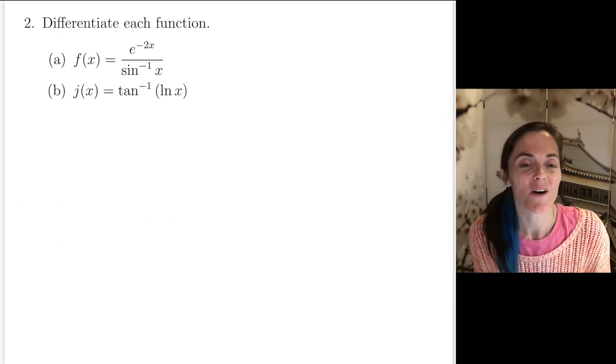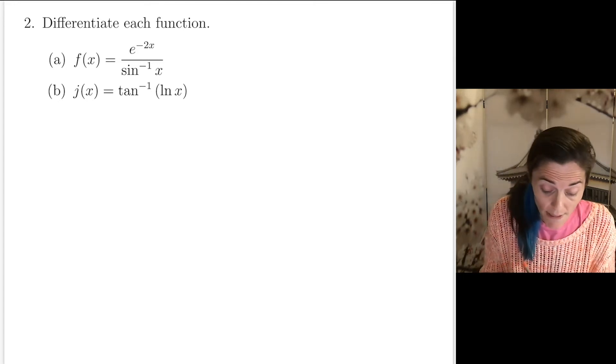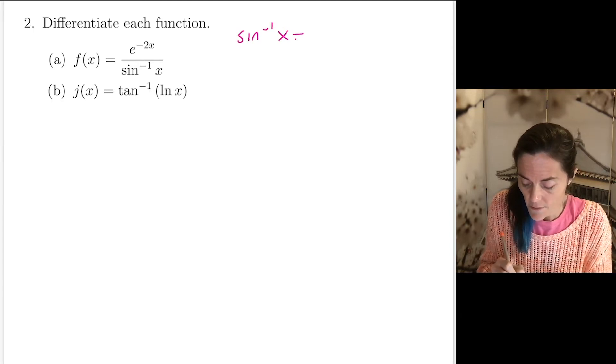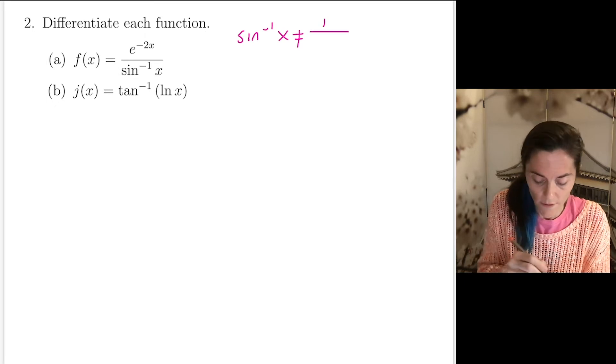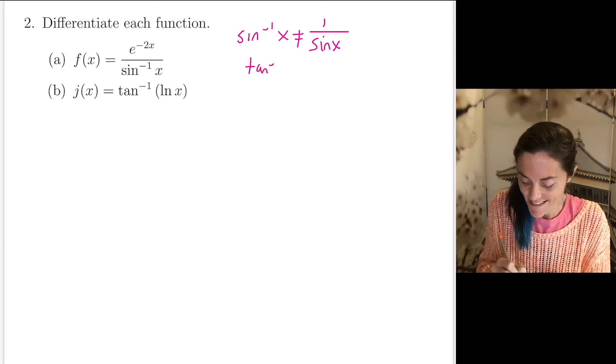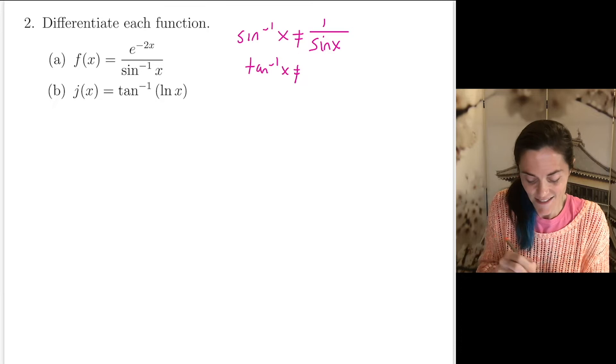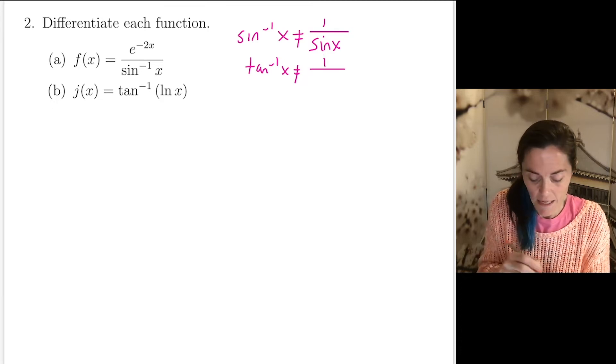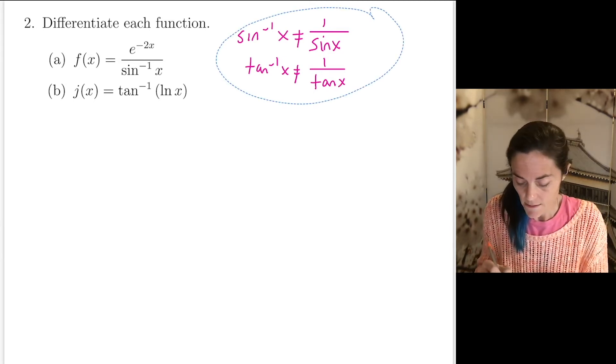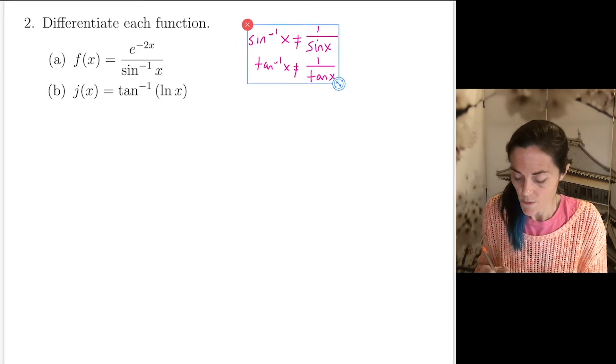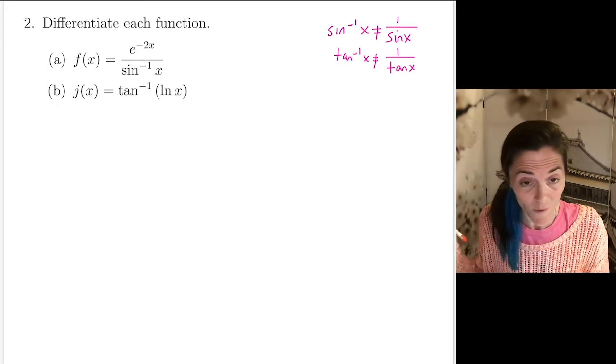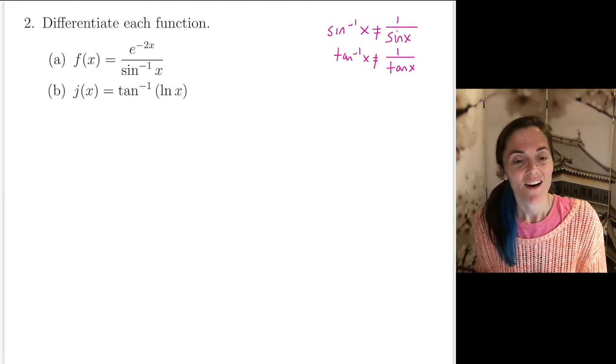Number 2, this is the one that involves some of our inverse trig functions. It's important to understand here that this is definitely not 1 over sine. And similarly, the tan inverse is definitely not 1 over tangent. Some textbooks call these the arc tangent and arc sine. Ours does not. I use the notation of our textbook, which is sine inverse and tan inverse. But it's important to note these are the inverse trig functions. It is not 1 over sine. It is not 1 over tangent.